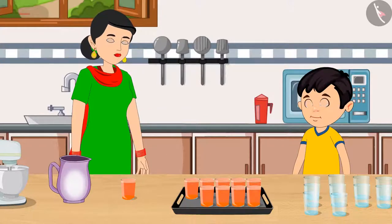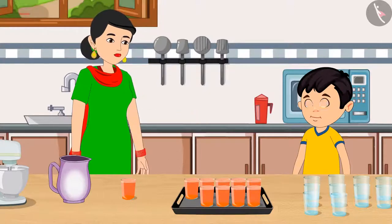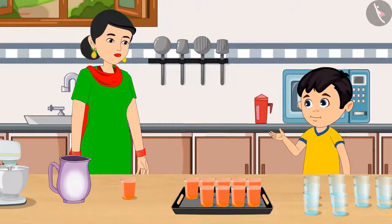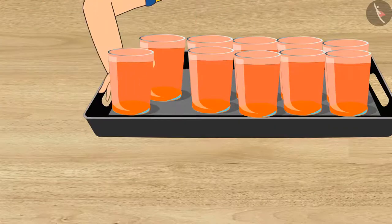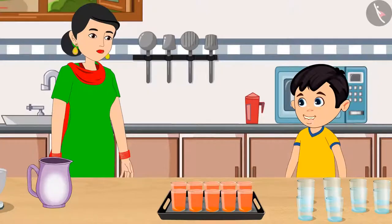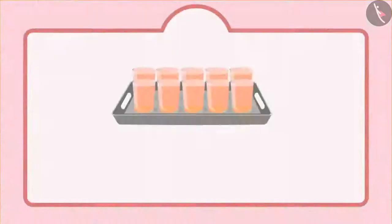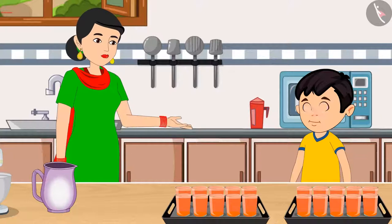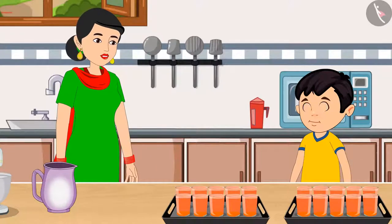So this means, Chotu, that right now we have 9 units. Chotu said: 'Yes, Mummy, I remember.' Now, if we put one more glass in this plate, it will be a group of 10 glasses, and we call it 1 ten. Mum agreed: 'You are absolutely right, Chotu. Here you go — your sherbet is ready.'